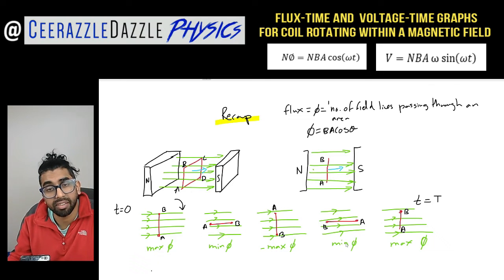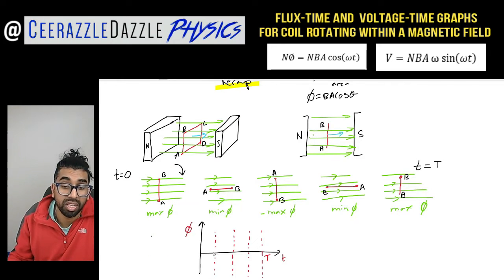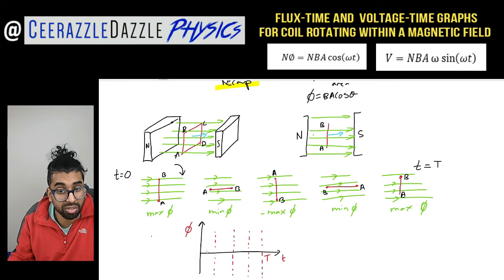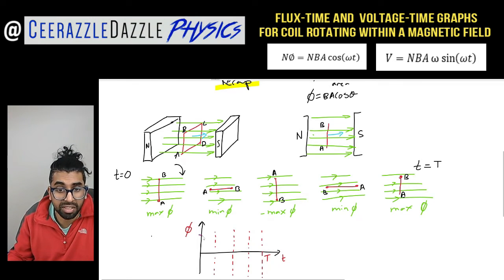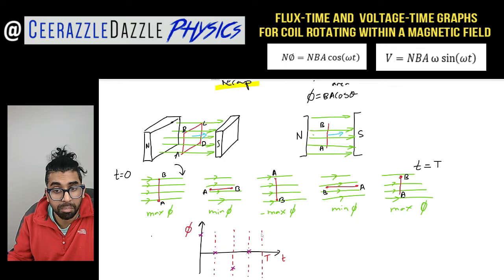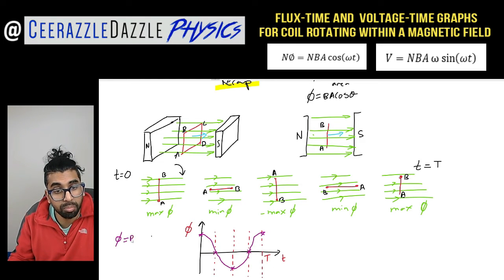Now let's sketch the graph of flux versus time. On the y-axis we have flux, on the x-axis we have time, and the time for one complete oscillation is the time period T. Initially we get maximum flux, then it goes to minimum, then maximum in the other direction, then minimum, then maximum again. This gives us a cosine graph — which makes sense since phi = BA cos(θ).